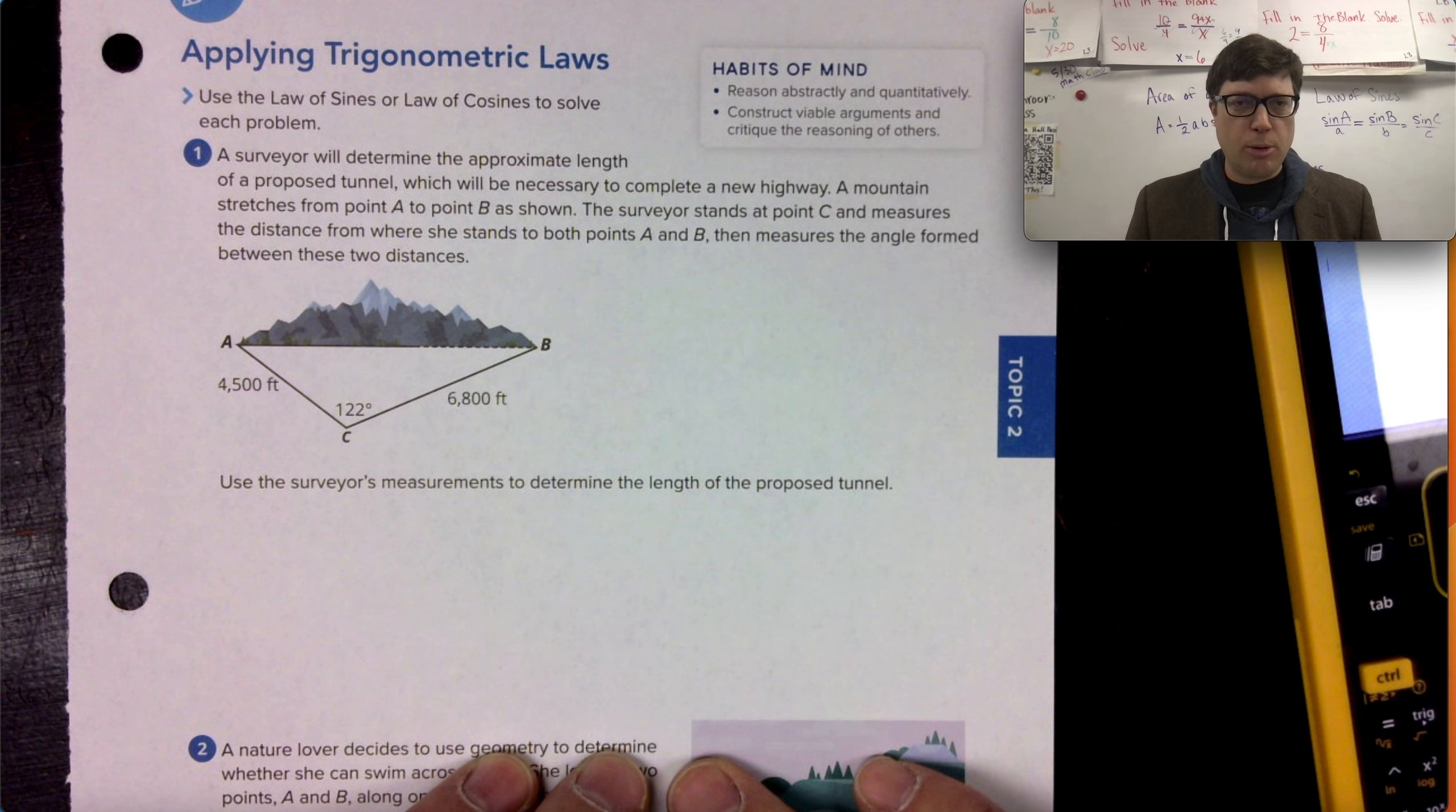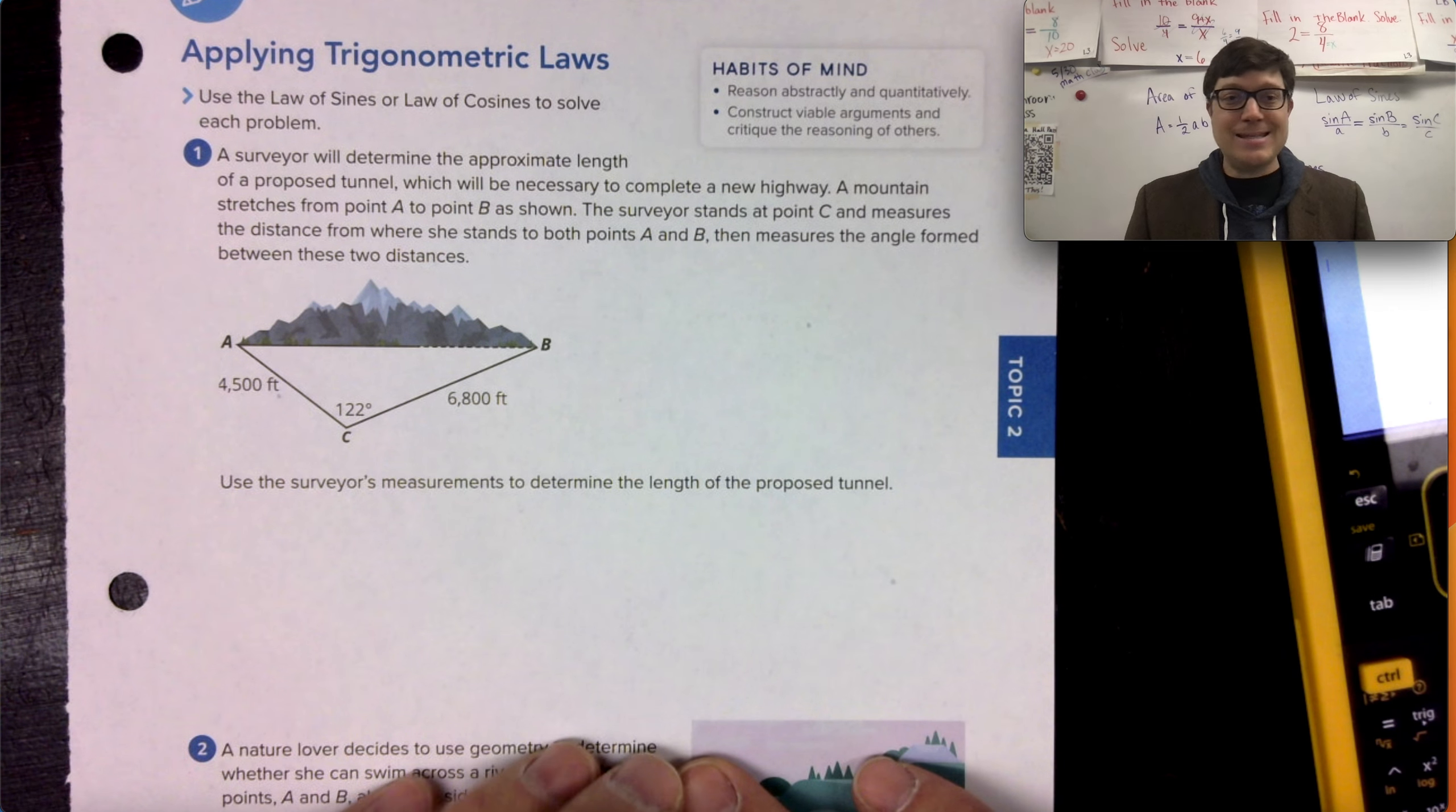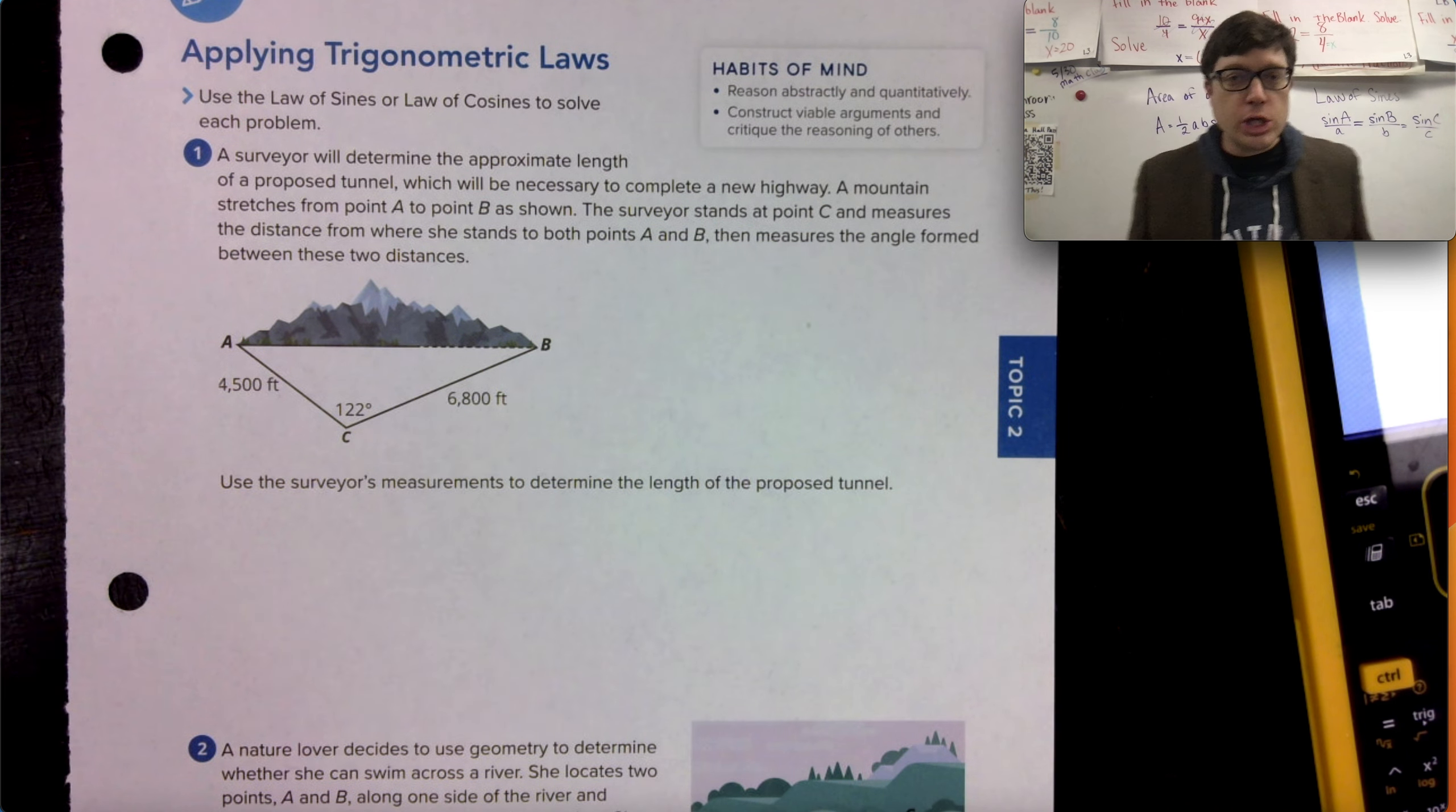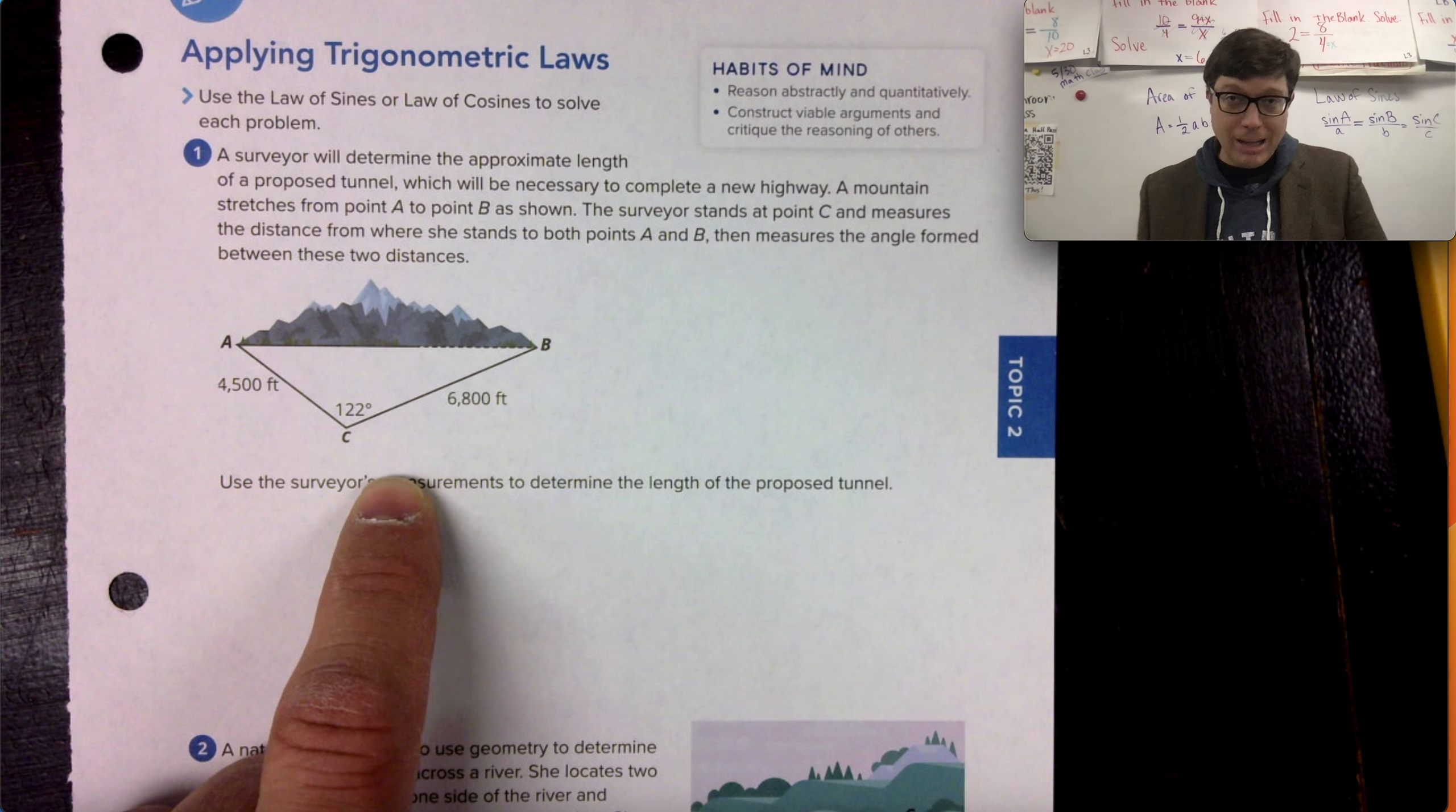Use the law of sines or law of cosines to solve each problem. A surveyor will determine the approximate length of a proposed tunnel, which will be necessary to complete a new highway. A mountain stretches from point A to point B as shown. A surveyor stands at point C and measures the distance from where she stands to both points A and B. You know what a surveyor is, by the way, they have this like a spyglass, like it's a telescope that stands on a tripod and then they can sight it in. Lasers are used to help get accurate measurements.